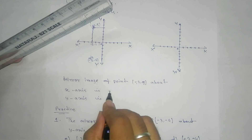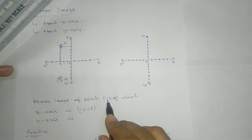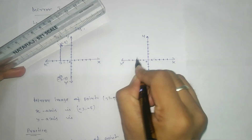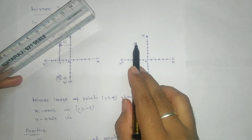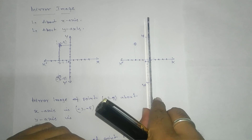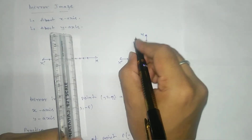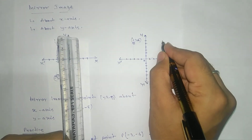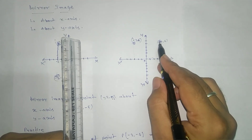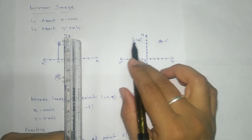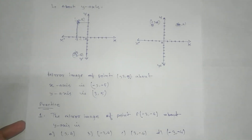Now for the mirror image of (-3, 5) about the y-axis, we place the mirror along the y-axis. The image will be on the opposite side. The y-coordinate remains five, but the x-coordinate changes sign from minus three to plus three. So the mirror image of (-3, 5) about the y-axis is (3, 5). I hope you understood — there are two practice problems for you. Thank you.